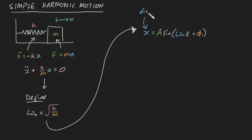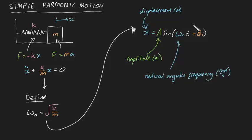In this formula x is the displacement of the mass from equilibrium at some time t, a is the amplitude of oscillation, omega n is your natural angular frequency, t is time, and phi subscript 1 is your phase.